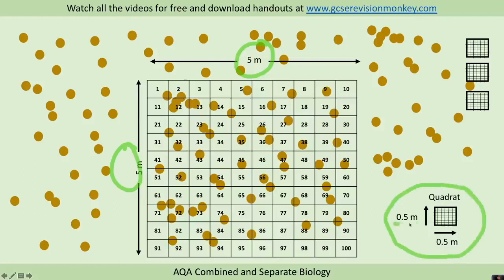Then the most important thing with random sampling is we use a grid called a quadrat. The one I'm going to use in this example is a 0.5 meter by 0.5 meter quadrat. In the exam, it may well be a different size, but that's absolutely fine.